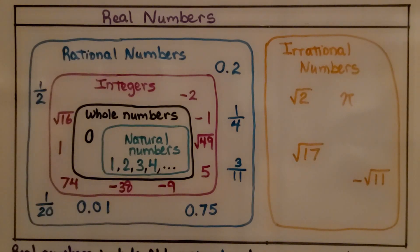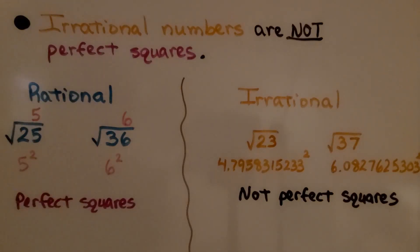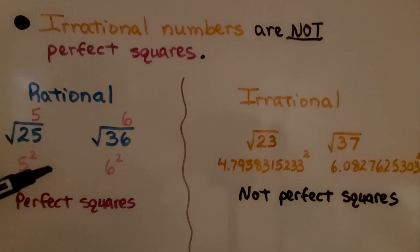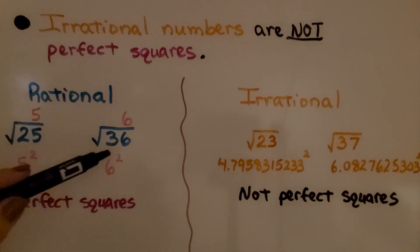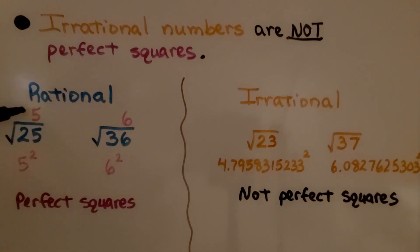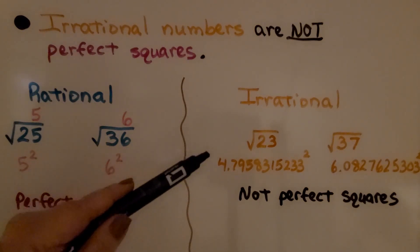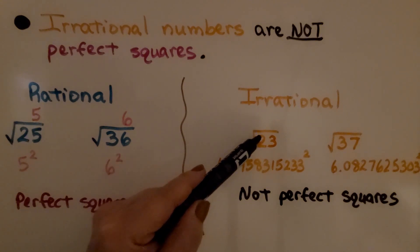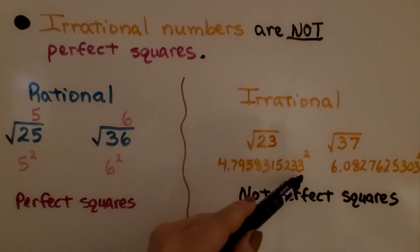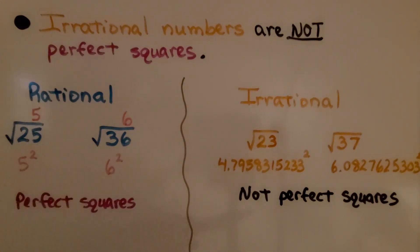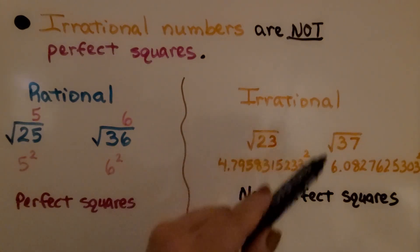Real numbers include all rational and irrational numbers. Irrational numbers are not perfect squares. Here we have some perfect squares: the square root of 25 is 5 because 5 times 5, 5 squared is 25. The square root of 36 is 6 — that's 6 times 6, 6 squared. These are rational because we get a whole number, 5 or 6. The irrational numbers would be like the square root of 23, which is 4.7958315233 squared — not a perfect square. Similarly, the square root of 37 has many decimal places. These are not perfect squares and are irrational.